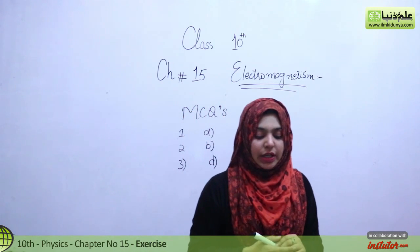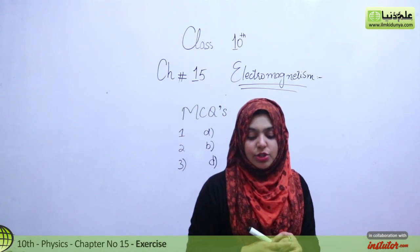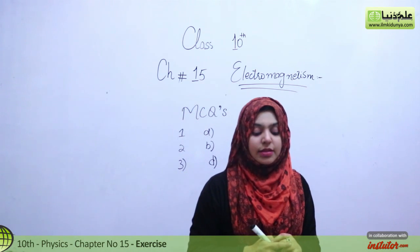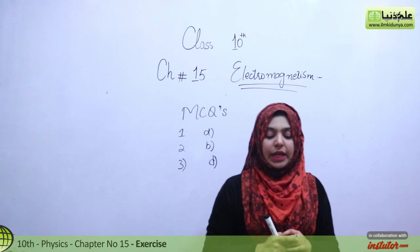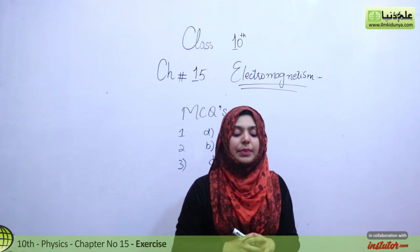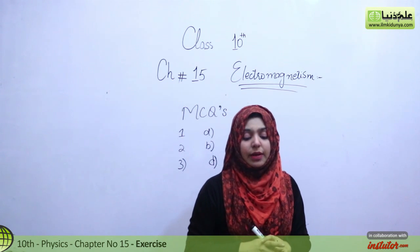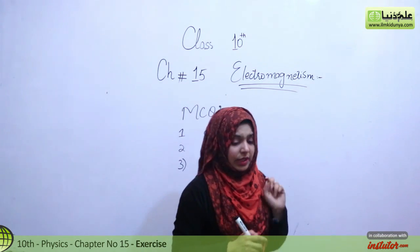Number 4 is: if current in a wire, which is placed perpendicular to the magnetic field, increases — the force on the wire: number A increases, number B decreases, number C remains the same, number D will be zero.